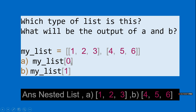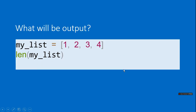The first list is at index 0 giving [1, 2, 3], and at index 1 is [4, 5, 6]. The next question asks for the output of len(my_list) where my_list is [1, 2, 3, 4].